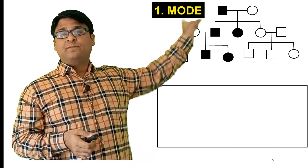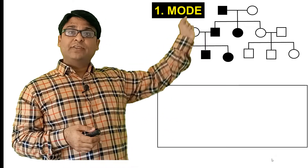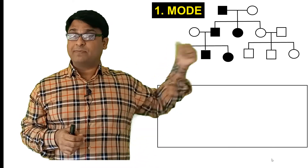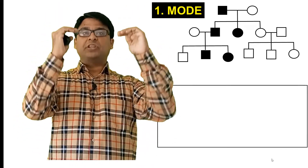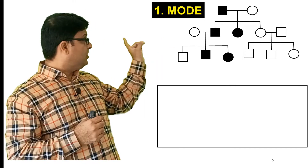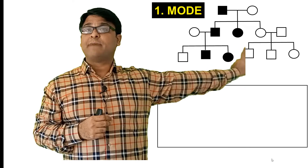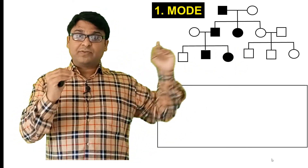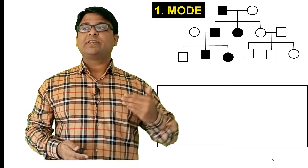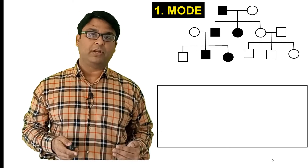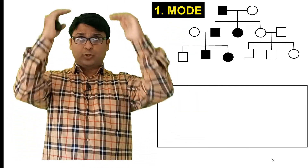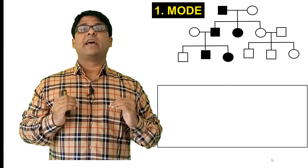Look at the male and female at the top — the head of the family. The male is diseased and the female is normal. They have three children: one son and two daughters. The son is diseased, one daughter is diseased, and one daughter is normal. In the next generation, the diseased male is married to a normal female, and the normal daughter is married to a normal male. The diseased male passes the disease on to the next generation. So you see disease in every generation, and it is moving vertically downwards — that is one of the major characteristics of autosomal dominant disorder.